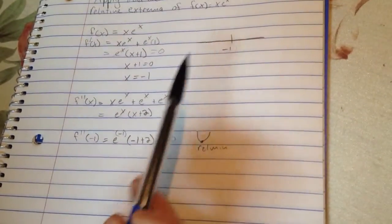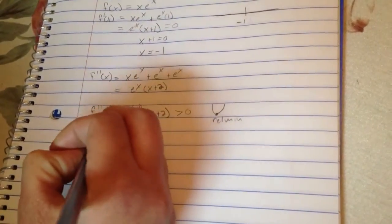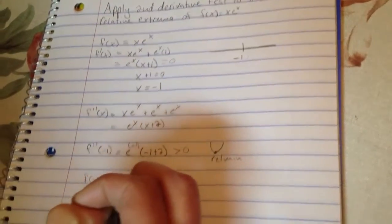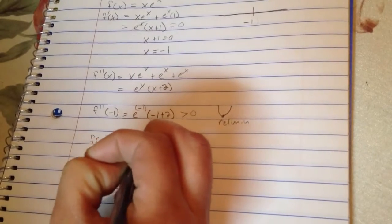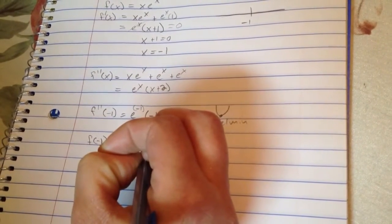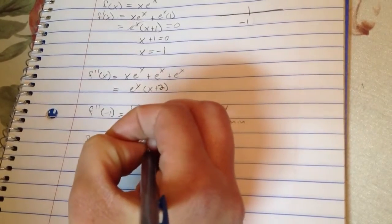So, we're going to take our critical number and we're just going to plug it into the original function. So, we've got f of negative 1 is equal to negative 1 times e to the negative 1.